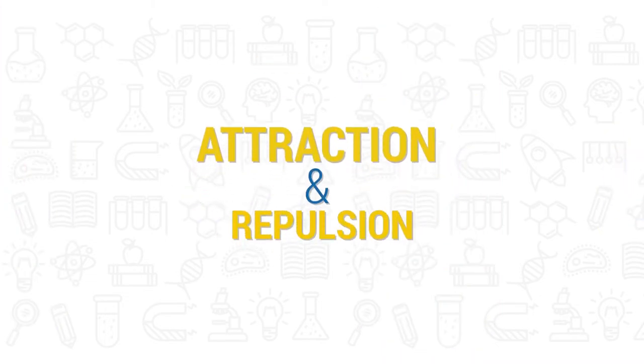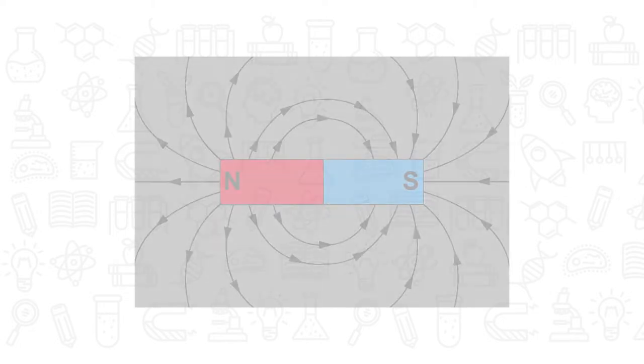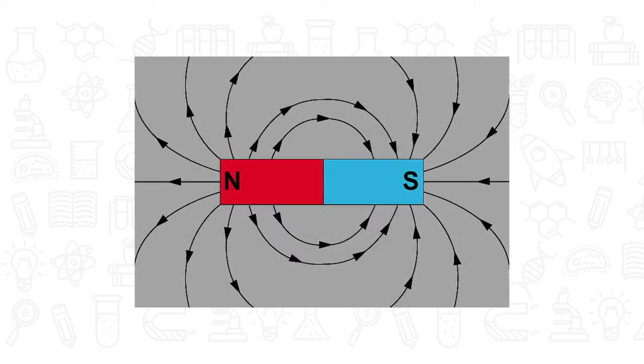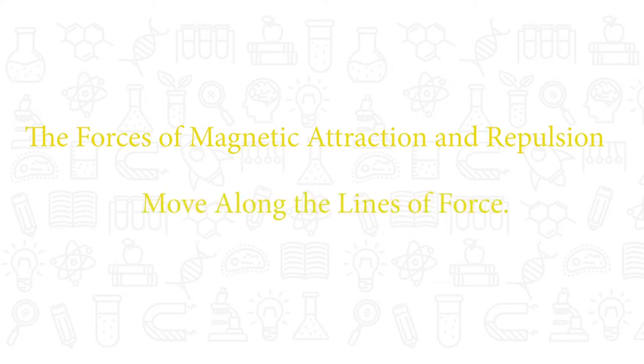Attraction and Repulsion. Magnets are surrounded by magnetic fields. A magnetic field can be thought of as consisting of lines of force. The forces of magnetic attraction and repulsion move along the lines of force.